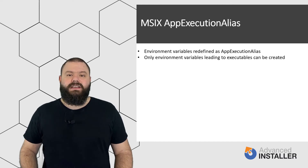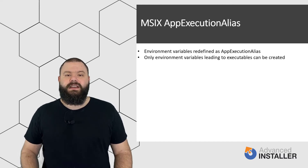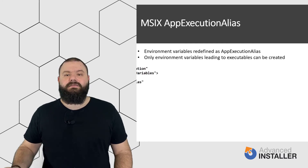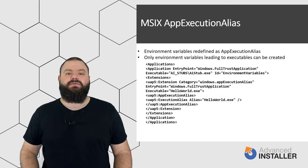For example, to create an app execution alias for a hello world executable present in the MSIX package, you need to add the following line to your appx manifest file.